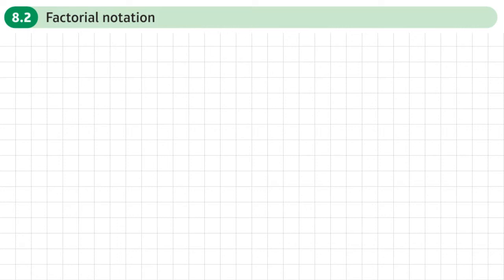This is the second section of chapter 8 on the binomial expansion, and this is factorial notation. So what is the factorial notation? Well, it's a shorthand, basically. So, for example, if I had 5 times 4 times 3 times 2 times 1, I could write that as 5 factorial.